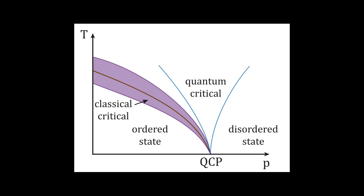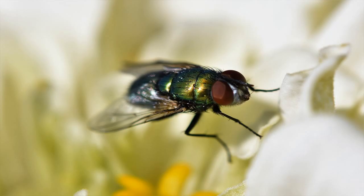The field overlaps with chemistry, materials science, and nanotechnology, and relates closely to atomic physics and biophysics. The theoretical physics of condensed matter shares important concepts and methods with that of particle physics and nuclear physics.